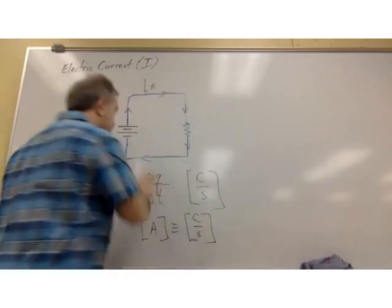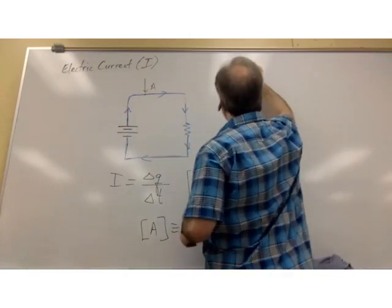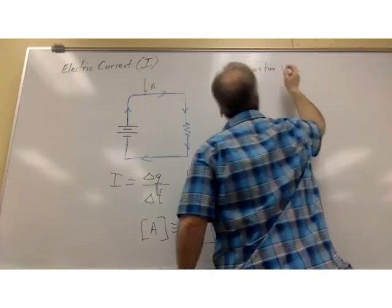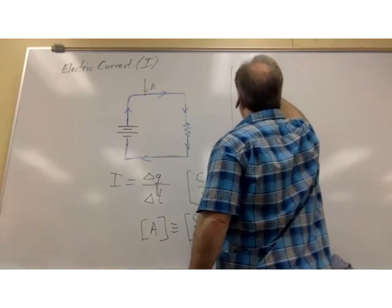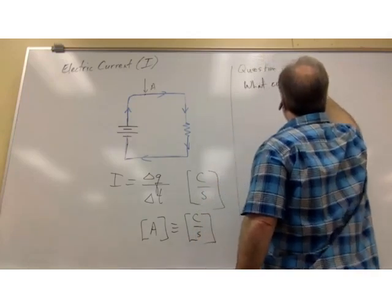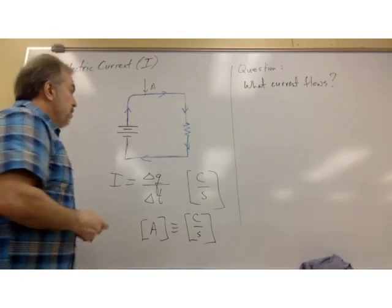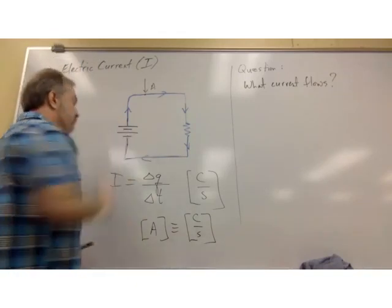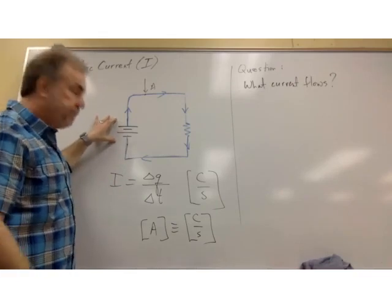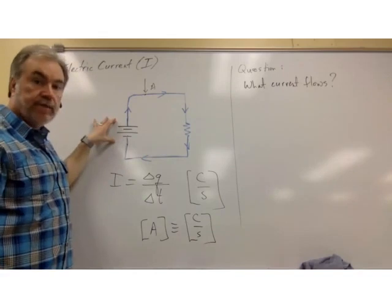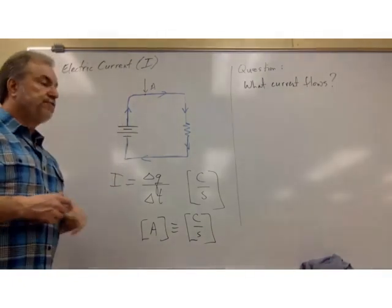My endgame here is to generate an equation which answers that question. To start off: the potential difference supplied by the battery — and this doesn't have to be a battery, it could be the wall outlet, but let's just call it a battery. This battery supplies a potential difference, which supplies an electric field, which causes the charge to flow.